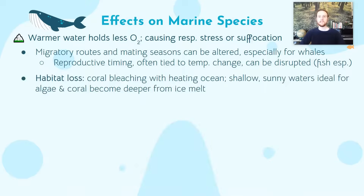Another issue is habitat loss. We'll focus on coral bleaching and the loss of the coral reef ecosystem later in this video. But beyond bleaching, ocean temperature and ocean depth can change as a result of melting polar and glacial ice. The warm, shallow, sunny waters that are critical for algae growth helping the coral reef ecosystem thrive can go away as these shallow coastal waters become deeper due to melting sea ice and thermal expansion.